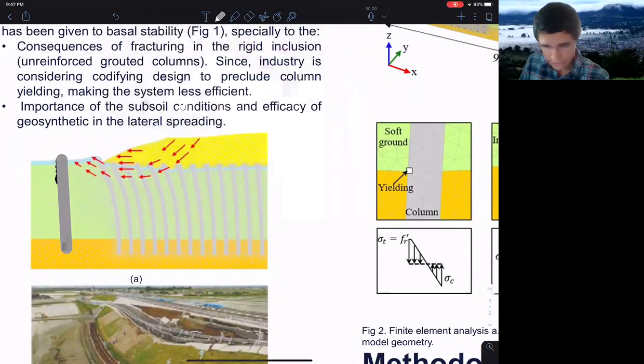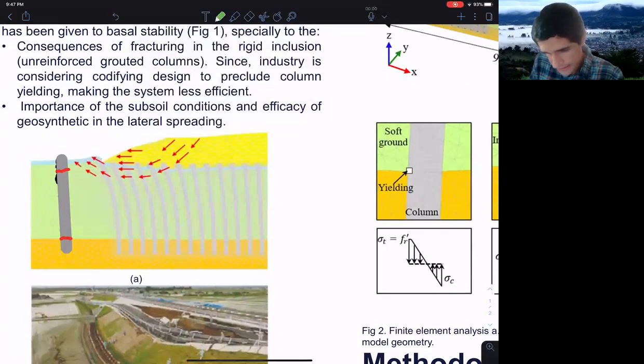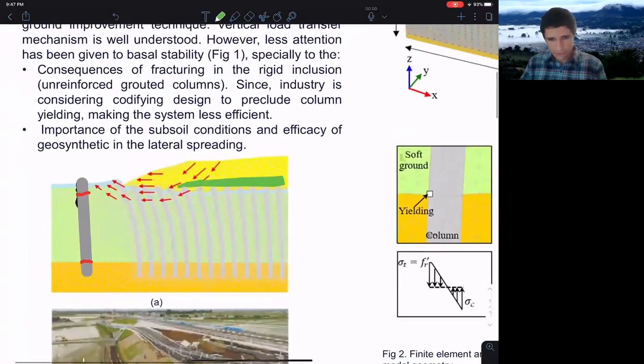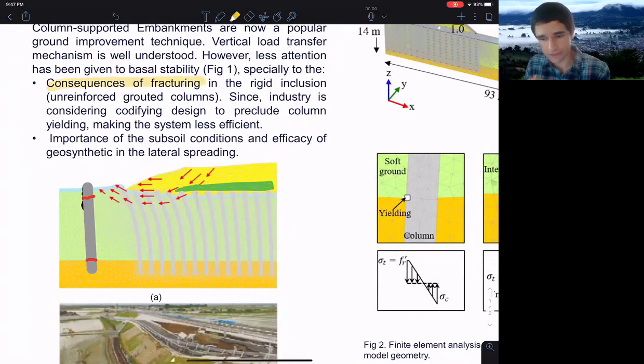One of the concerns in the industry now is regarding the fracture of these columns because this is unreinforced concrete and there is no steel. Former piles have steel and also have a slab, and they can transfer the load very equitably to each column. But now the system has evolved and is more efficient. So they want to know what will be the consequence of fracturing of the rigid inclusion.